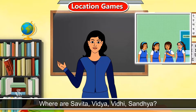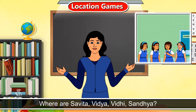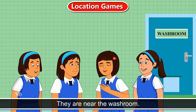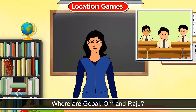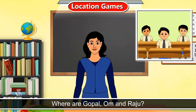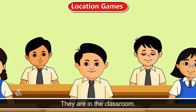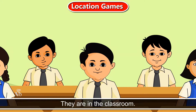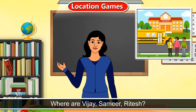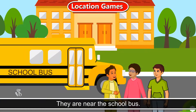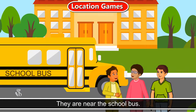Where are Savita, Vidya, Vidhi and Sandhya? They are near the washroom. Where are Gopal, Om and Raju? They are in the classroom. Where are Vijay, Samir and Ritesh? They are near the school bus.